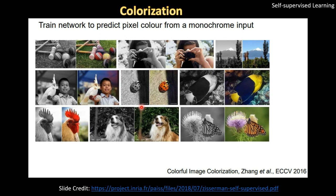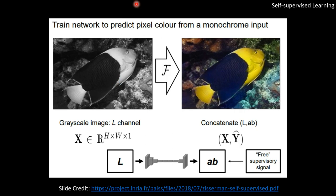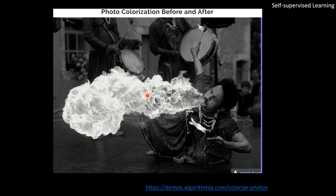Another pretext task is colorization, where given a one-channel monochrome image you have to predict the color. For example, if the image is in Lab color space, your input would be the L channel and the model needs to predict the A and B channels. This is the pretext task, and in this way you get free supervisory signals. You can visit the website — I'll put the link in the description — it's really nice.